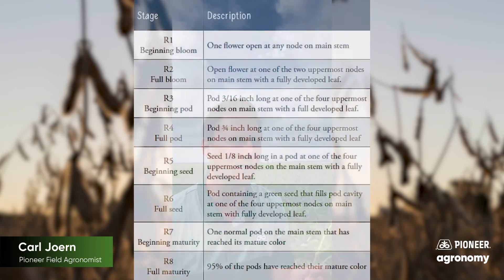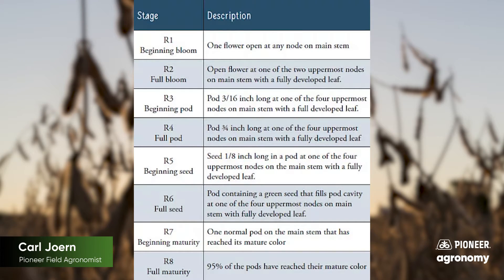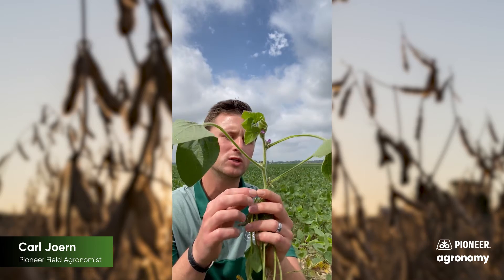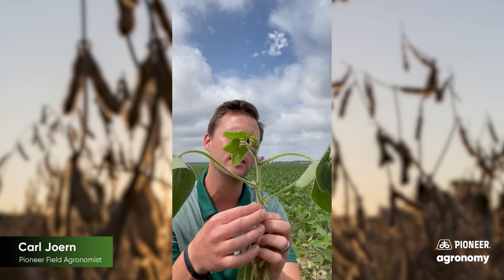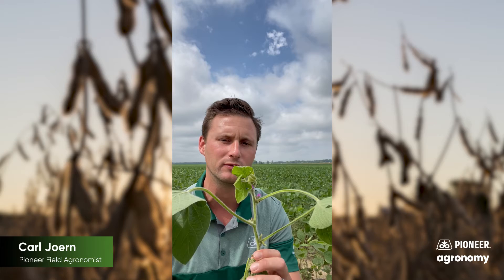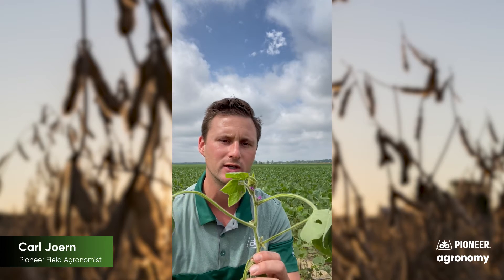We spend about 10 days in that R2 to R3 growth stage, and then we enter into R4. How does one determine when they're in R4? Look at the four uppermost nodes of the plant, and once we have a pod that is the length of three quarters of an inch rather than one quarter, that's when we've established the R4 growth stage.